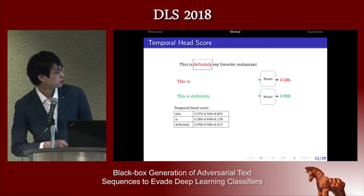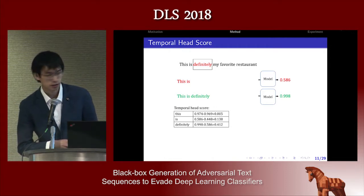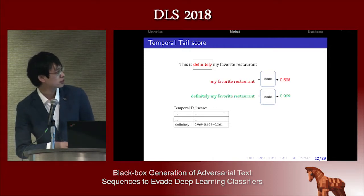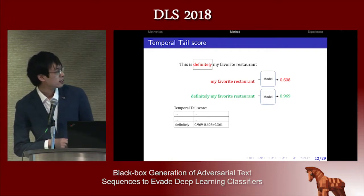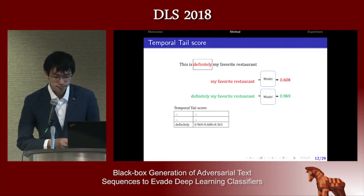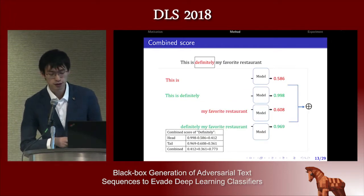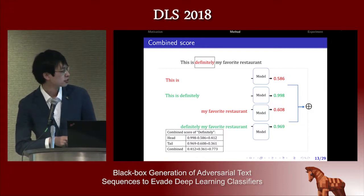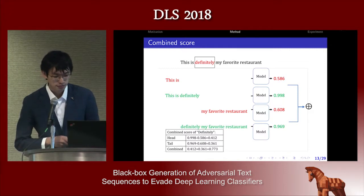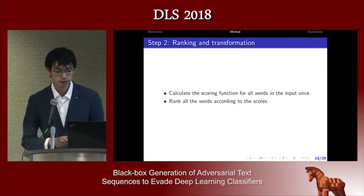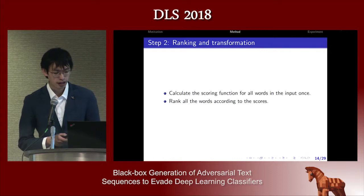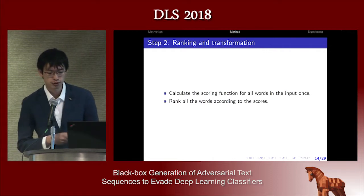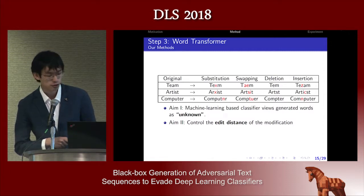This scoring function only considers the preceding part, so we also design another scoring function that considers the succeeding part. It sends the succeeding part into the model and compares the difference in output. We can combine these two methods to have a full view of the context — it's generally an estimation combining the two scores. After calculating all the scores, we rank all the words and send the top-ranked words through the transformation.